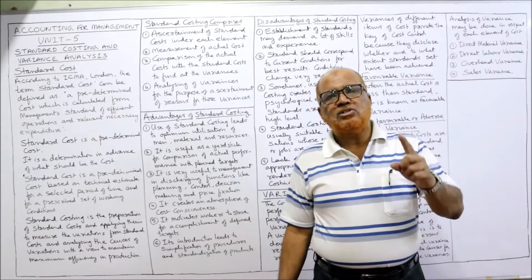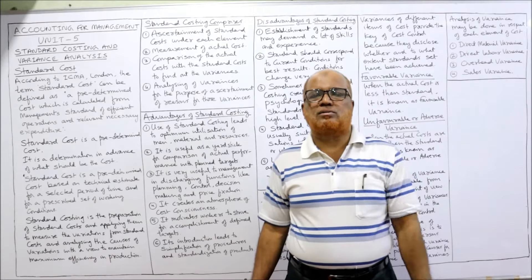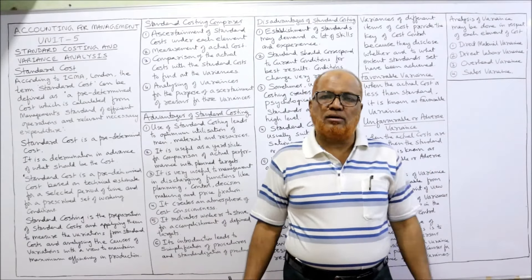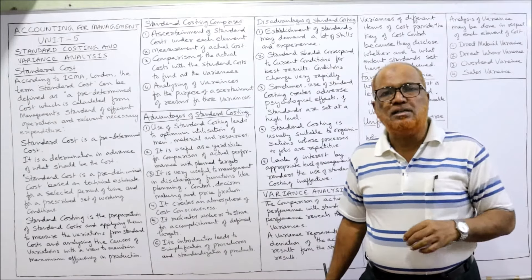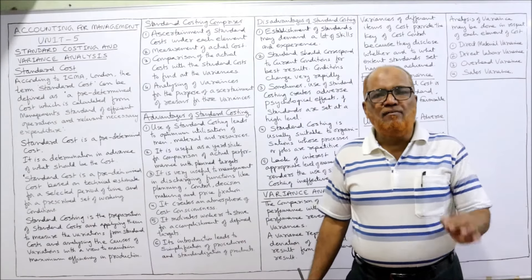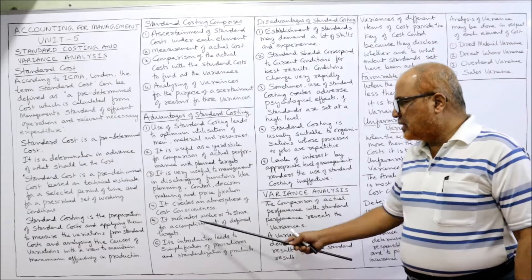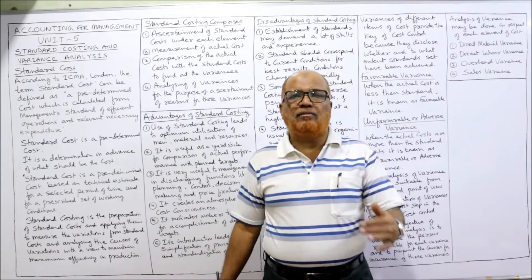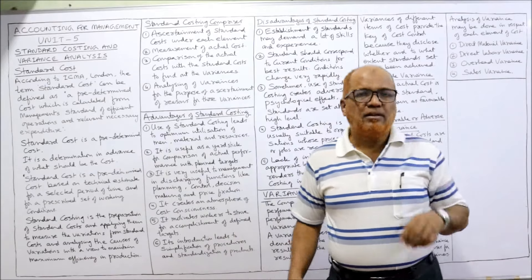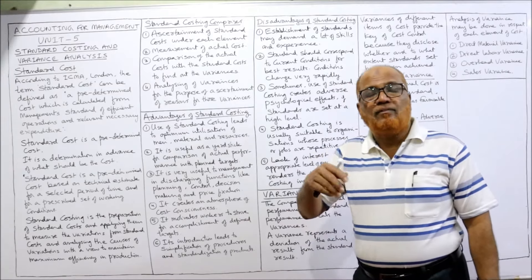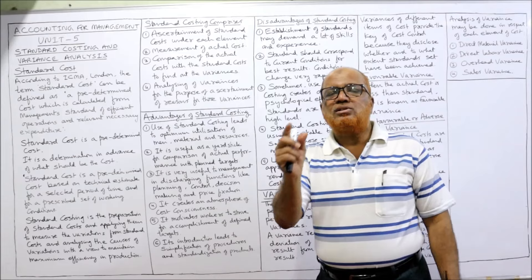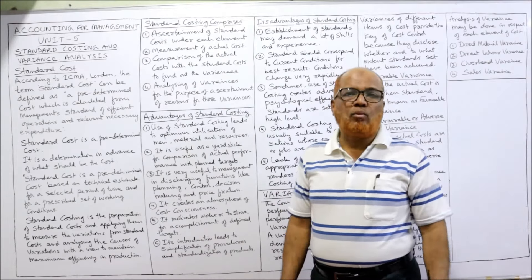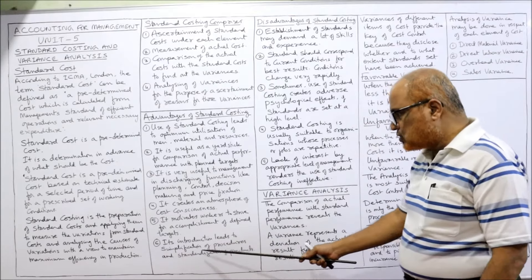It creates an atmosphere of cost consciousness. Nowadays there is a lot of competition in the market, and a business will become successful only when it can control the costs. A cost consciousness atmosphere will occur in the company if they implement standard costing, because the ultimate aim is that wastages should be eliminated — every resource should be efficiently utilized. The next advantage is that it motivates workers to strive for accomplishment of defined targets. Workers will get more incentives if they work hard and achieve the target set by standard costing.